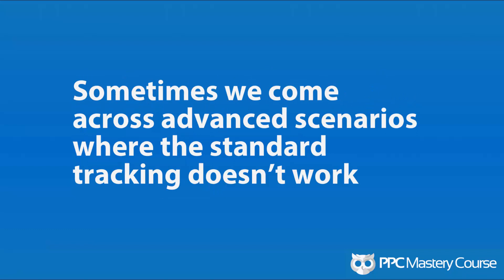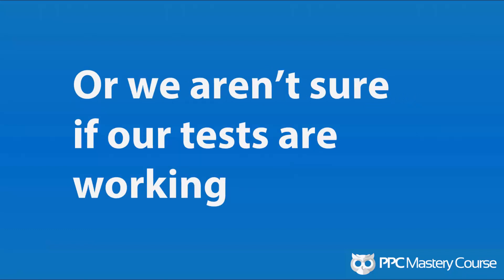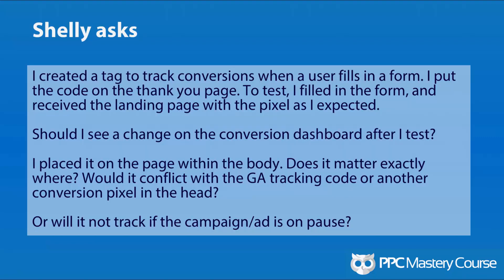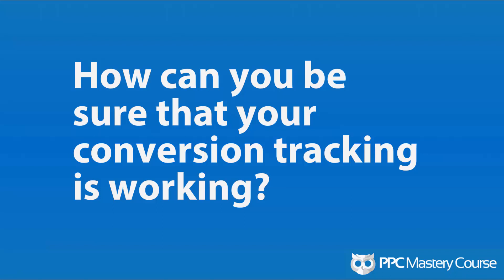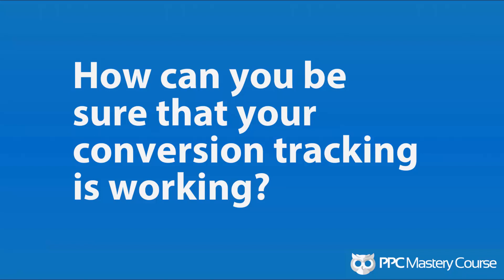PPC Course student Shelley asks: she created a tag and tracked conversions whenever a user fills out a form. She put the code on the thank-you page, then tested the form herself, and couldn't see the conversion in the dashboard. She wants to know if she put the tag in the right place — she put it in the body — and whether there's a conflict with Google Analytics, or if it's because the campaign isn't enabled yet. The underlying question is: how can you be sure your conversion tracking is working when you put it on your website?